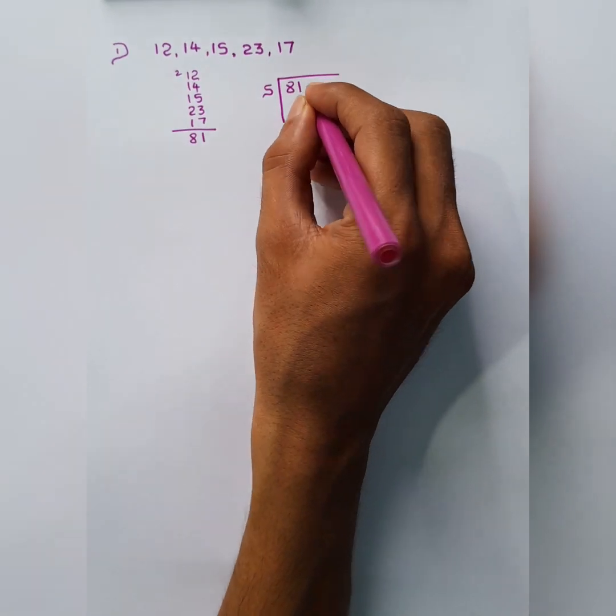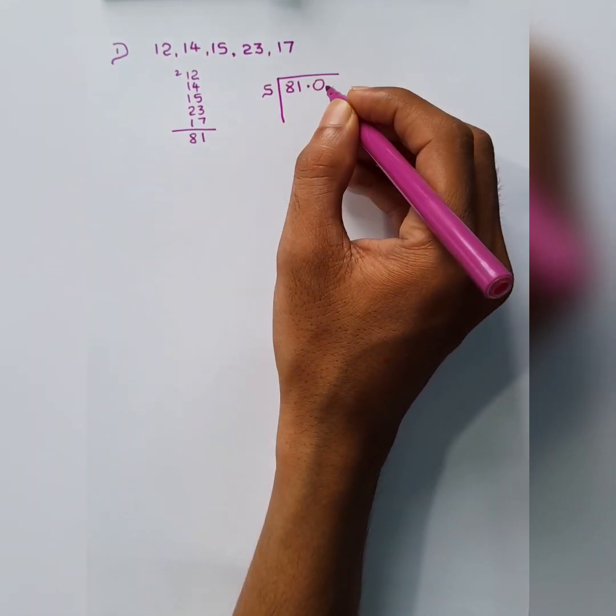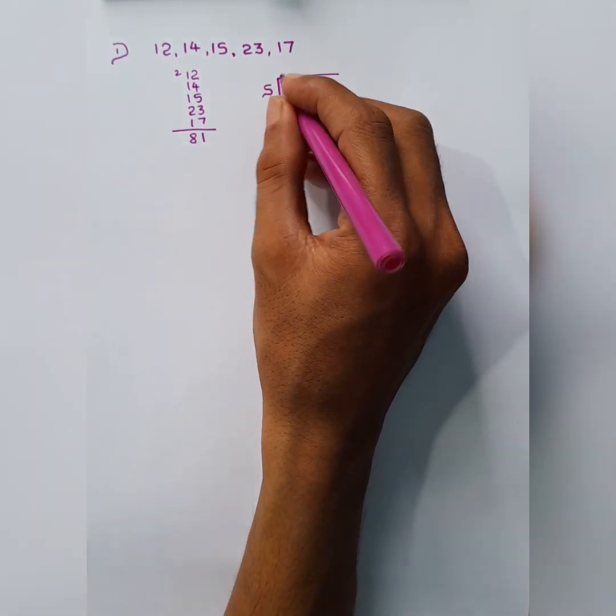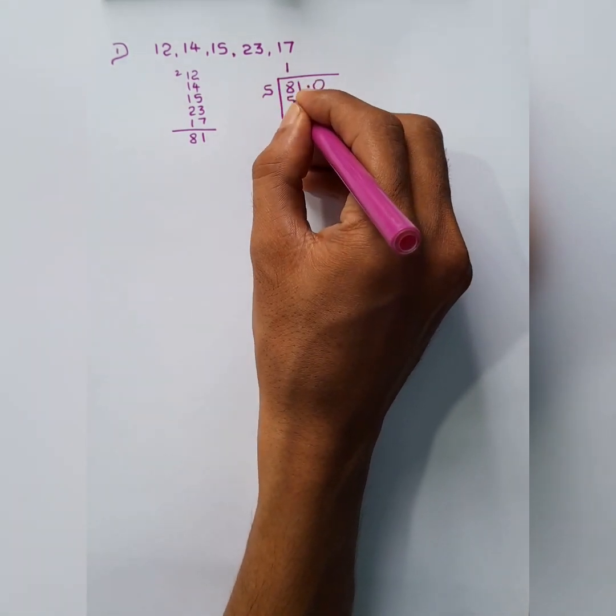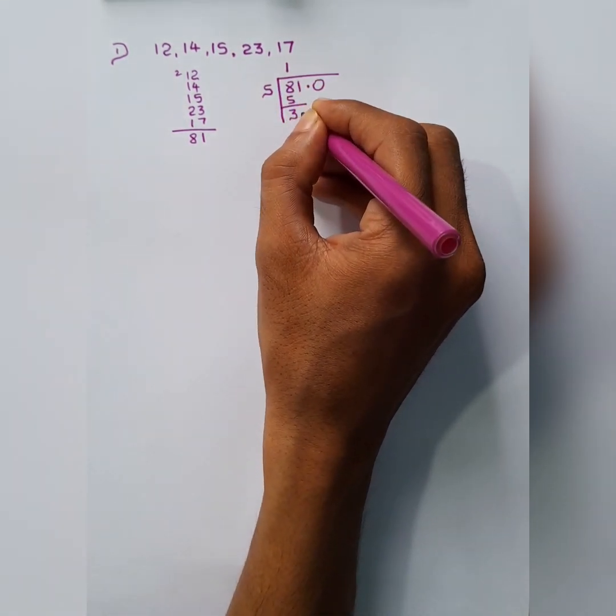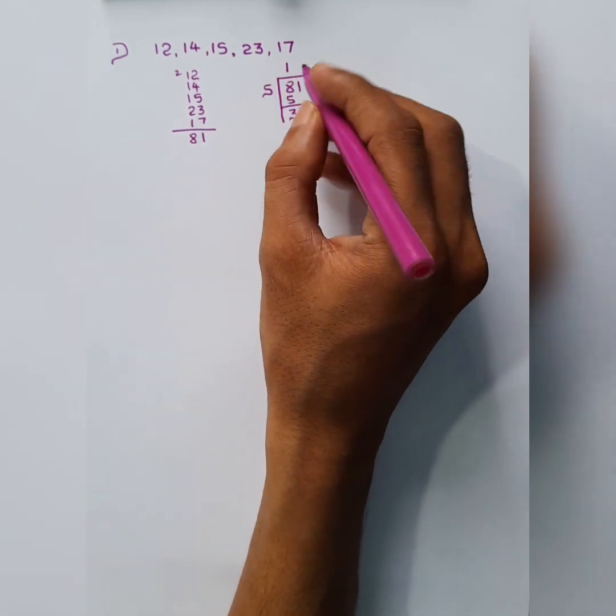And take one decimal. Always take one decimal. In 8, how many 5s? 1. And 1 times 5. In 31, how many are there? 6.